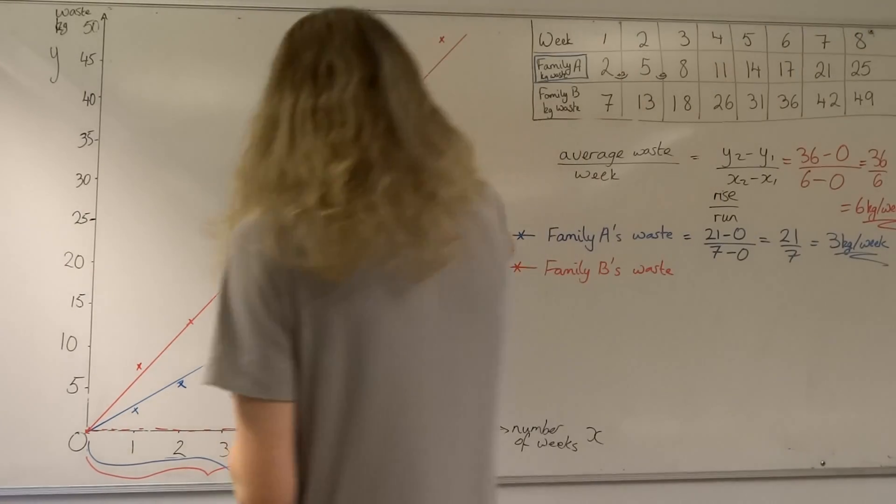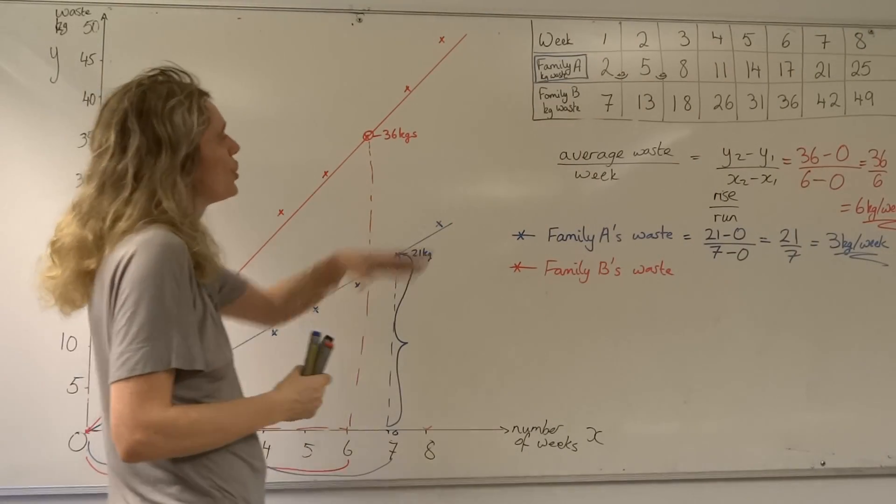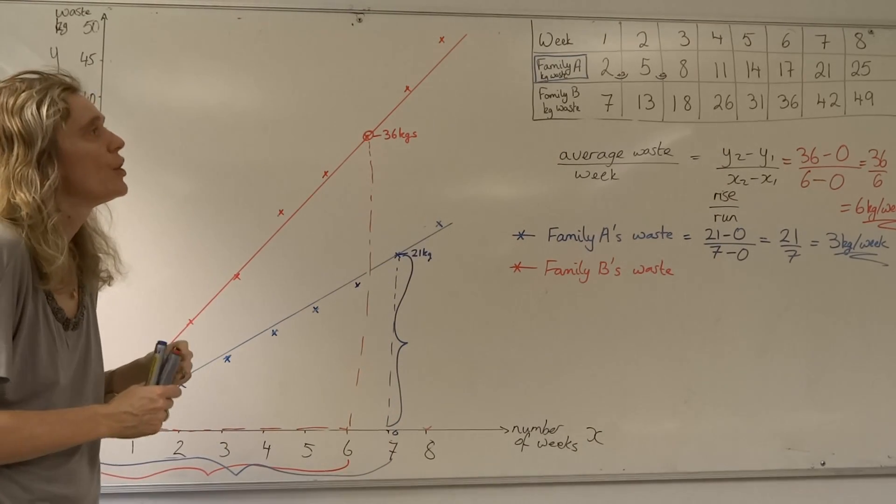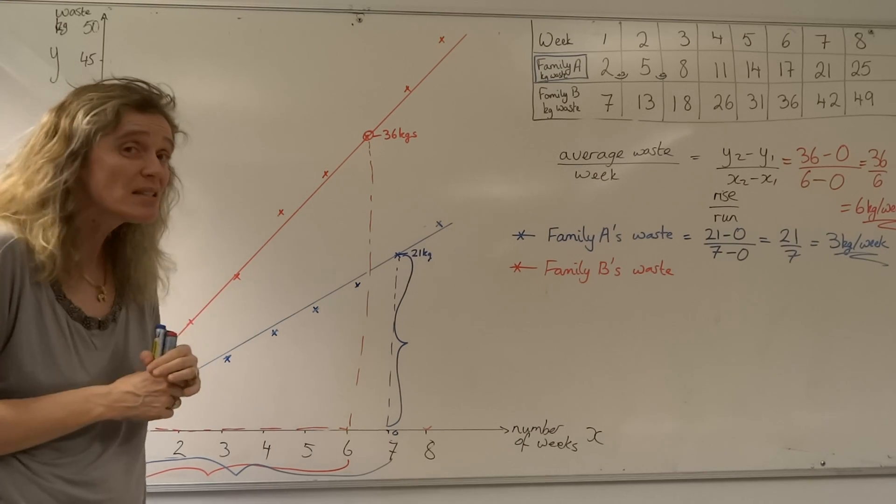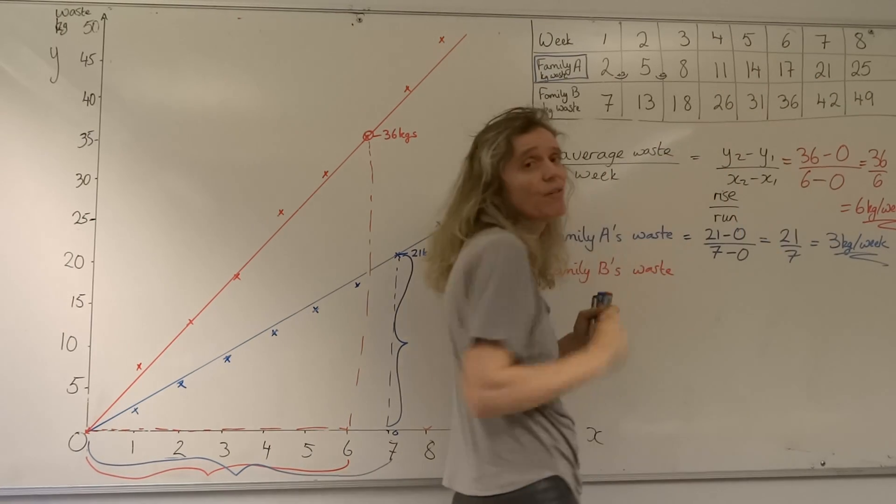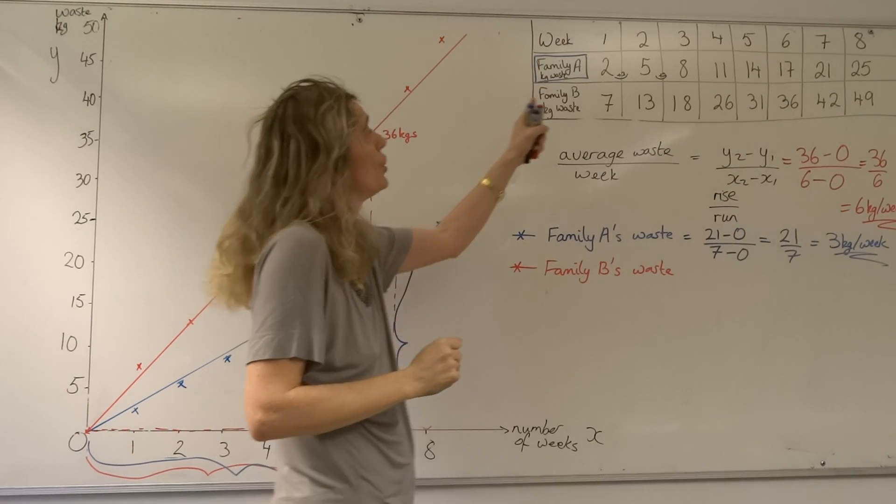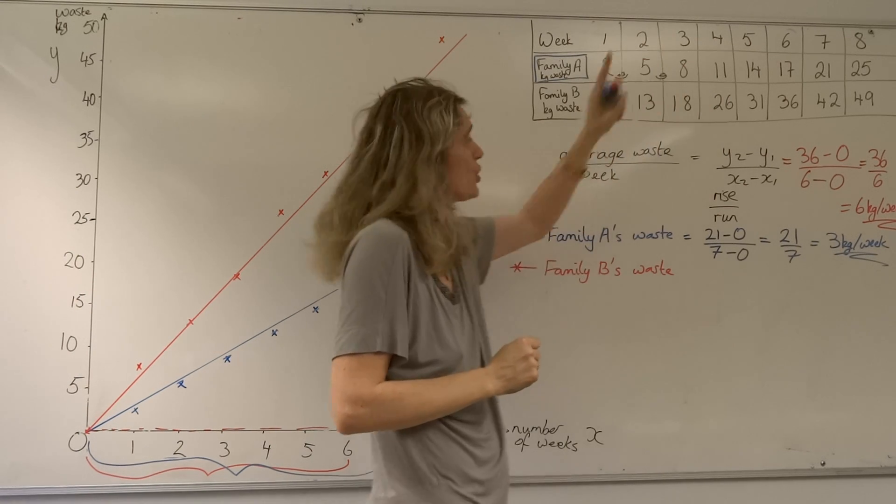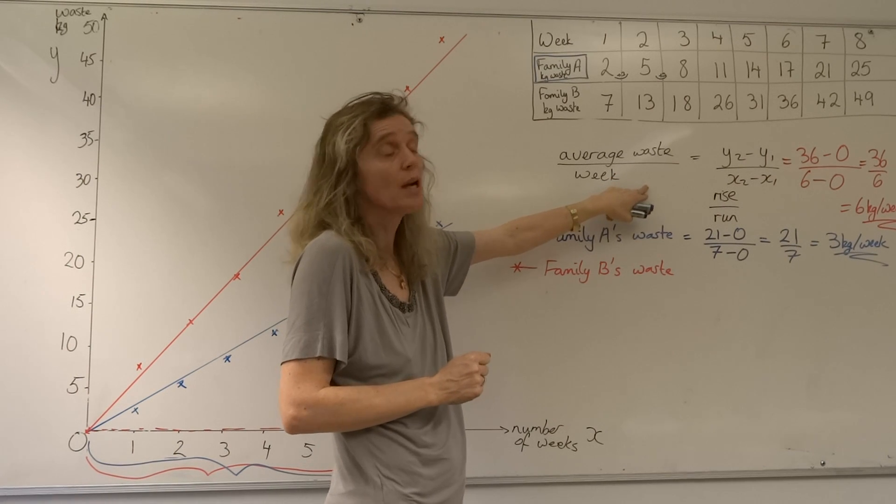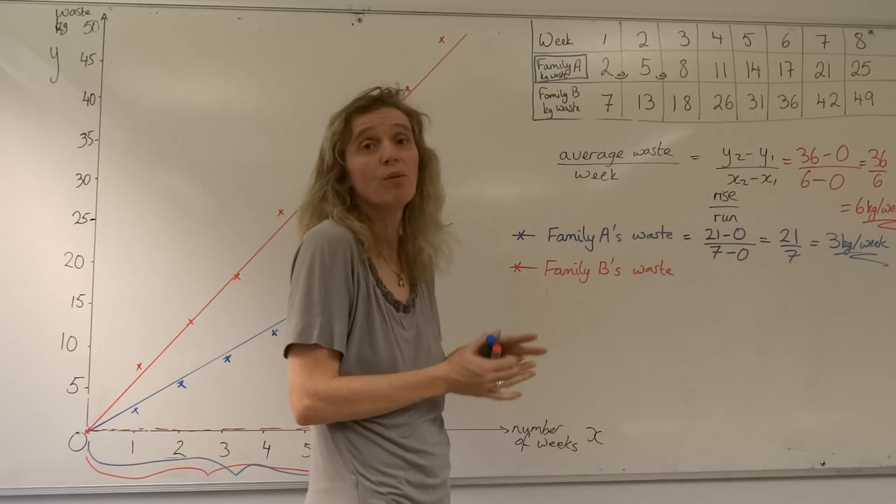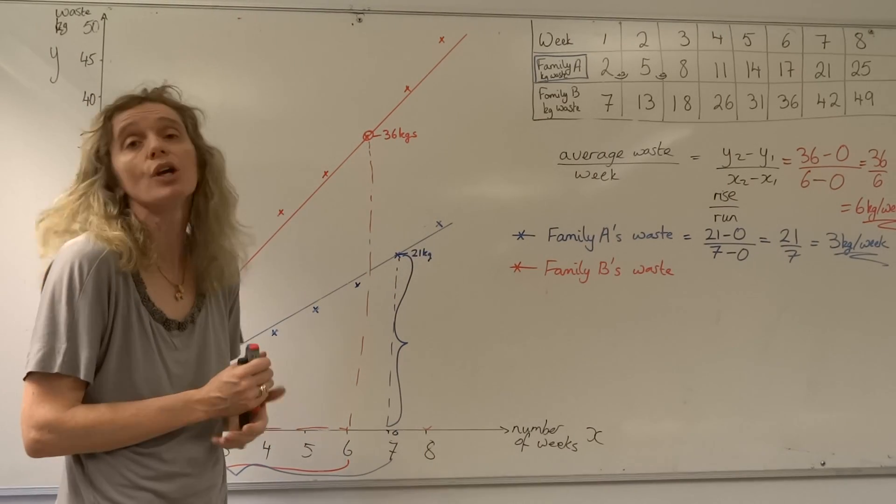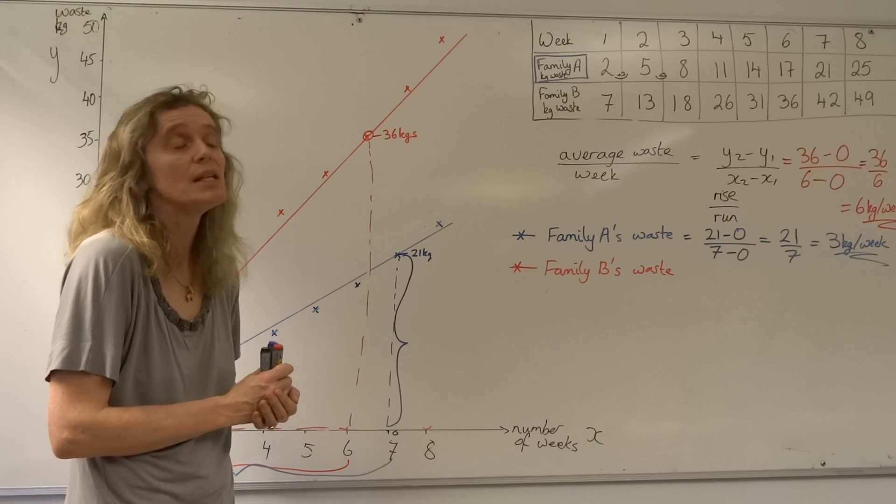One thing is, some of you feel tempted when you're trying to find the average, you mix it up with the word mean. The mean is something totally different. That's when you add up all of the totals you have here and divide by the number of numbers. The mean of these numbers is going to be much higher than the gradient we're finding, which is the average waste per week. So if you'd like to look at how to work out the mean, median, and mode, watch the next video because we're going to go through an example of how to find the mean, median, and mode.